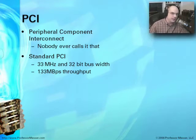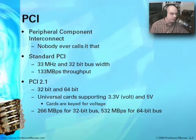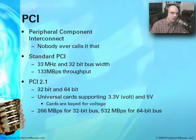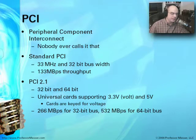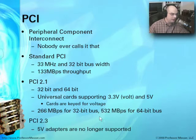That's quite a bit of throughput in that standard PCI slot, but today we need more. So newer versions of PCI came out. These newer PCIs allowed for both 32 and 64-bit cards that also ran at different voltages — 3.3 volt and 5 volt. Not only did we have different sizes of cards, they also ran with different voltages, increasing capacity up to 266 megabytes per second on 32-bit cards and up to 532 megabytes per second on 64-bit cards.